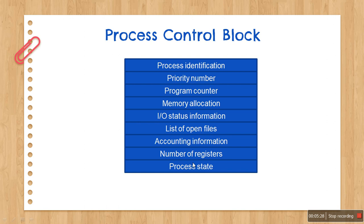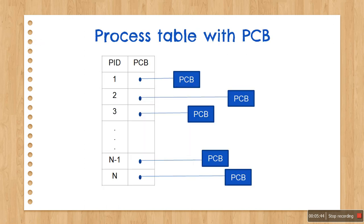The PCB also maintains other information not included in the block diagram shown here. This information may include CPU scheduling, file management, input/output management information, and others. The operating system maintains pointers to each process's PCB in a per-user process table or a system-wide process table. This allows quick access to the PCB — for example, the process with process ID 1 has its PCB stored at a particular address. A pointer points to the PCB related to process ID 1, another pointer to process ID 2, and so on, allowing quick access to the corresponding PCB and the information related to that process.